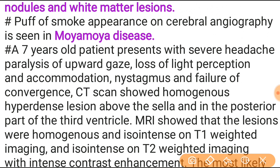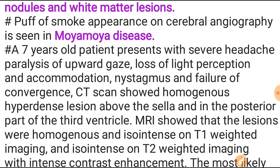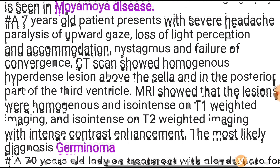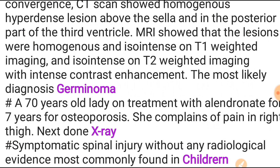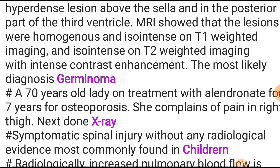Puff of smoke appearance on cerebral angiography is seen in Moya-Moya disease. A 7-year-old patient presented with severe headache, paralysis of upward gaze, loss of light perception and accommodation, nystagmus, and failure of convergence. CT scan showed homogeneous hyperdense lesion above the sella in the posterior part of the third ventricle. MRI showed lesions homogeneous and iso-intense on T1 and T2 weighted imaging with intense contrast enhancement. Most likely diagnosis is germinoma.